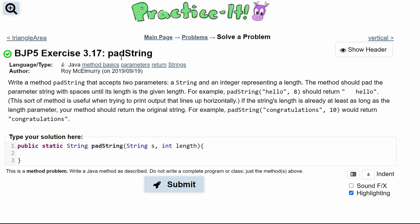For practice exercise 3.17 padString, we need to write a method padString that accepts two parameters: a string and an integer representing length. The method should pad the parameter string with spaces until its length is the given length. So we have this as our example and we can go off of this.